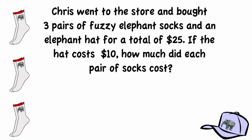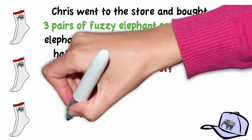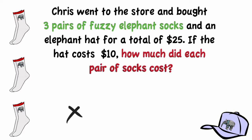So let's start by looking at the key information. There were three pairs of elephant socks and we need to find out what each pair cost. So let's call our socks x. Chris bought three pairs of them so that would be 3x.